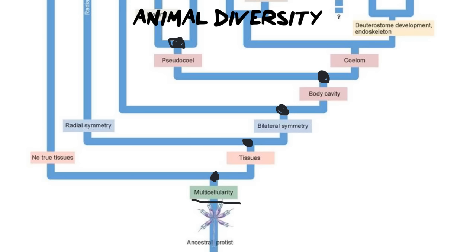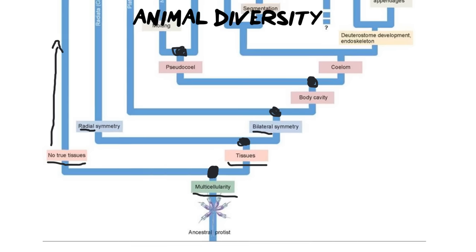This particular phylogenetic tree is quite useful because along each of the divides, they've told you what the animal has. Going back to the beginning and looking at the first common ancestor, this individual split into two possible groups: one that had no tissues, and one that did have tissues. The one with no tissues continued on this pathway, which becomes sponges. Going the tissue route, there was then another point of change — this common ancestor resulted in either radial symmetry or bilateral symmetry. To calculate how related an individual is, you need to look at how many common ancestors they have in common.